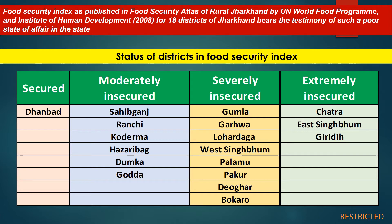The third category is 'Severely Insecure', where there are severe problems and insufficient supply of food items and other products required for normal health of the population. The districts in this category are Gumla, Galwa, Lohardaga, West Singhbhum, Palamu, Pakur, Deoghar, and Bokaro.